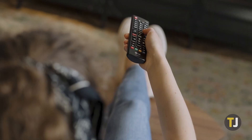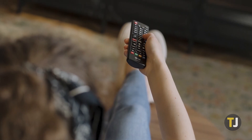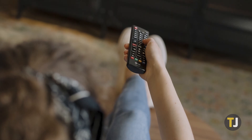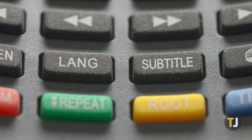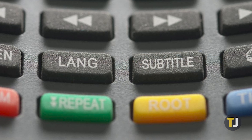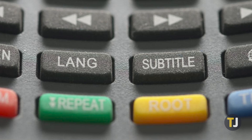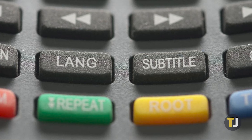If you're watching on your television's built-in Prime Video app, you may be able to use the closed captioning button right on your remote to toggle subtitles on or off. Make sure to check your television's manual for more instructions.